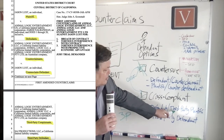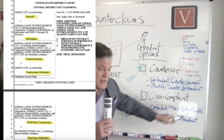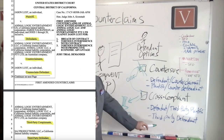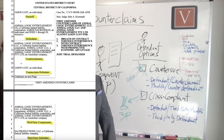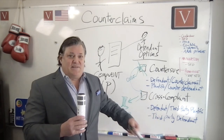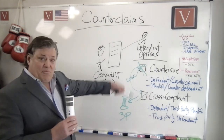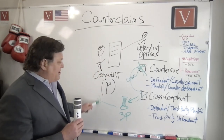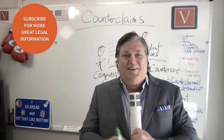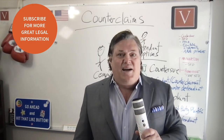When this happens, the defendant is now also the third-party plaintiff — the defendant is the counterclaimant and the third-party plaintiff against this new party, and that party becomes the third-party defendant. Now they have the same options: answer, raise affirmative defenses, motion to dismiss or demurrer — or if there's something even more related, they could bring in yet another party, and on and on it goes.